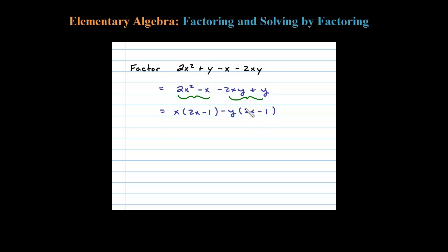Okay, so if we factor out that 2x minus 1, what will be left? Well, x minus y. Okay, so that's how you factor by grouping, certainly first rearranging the terms.